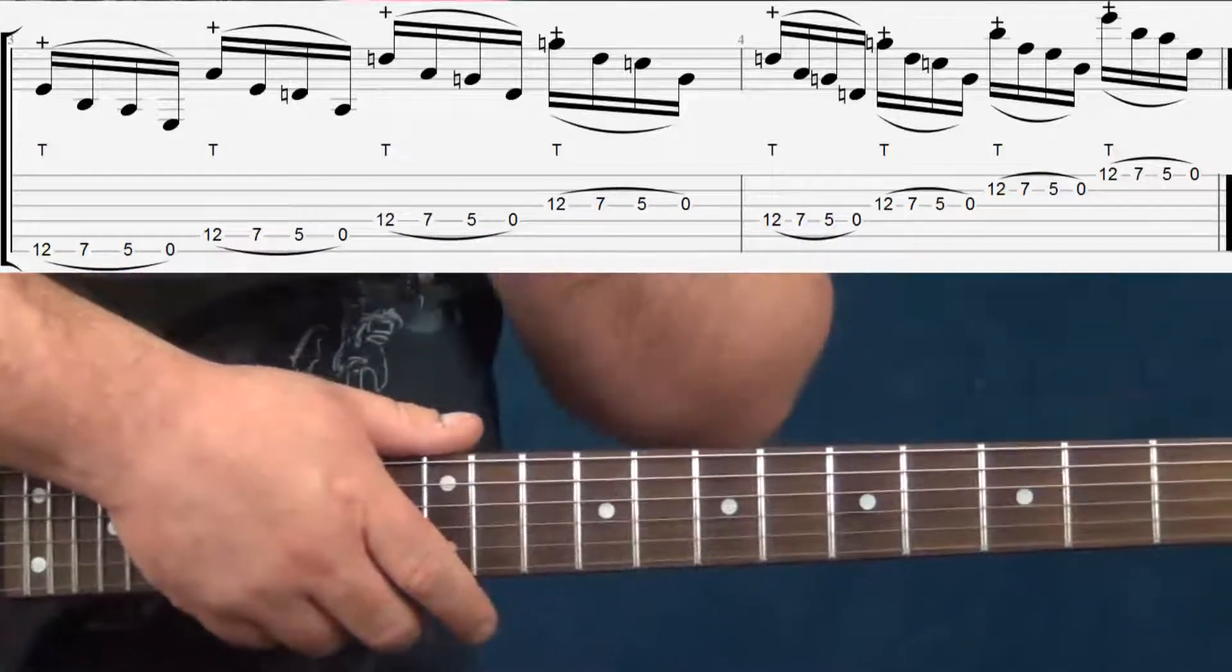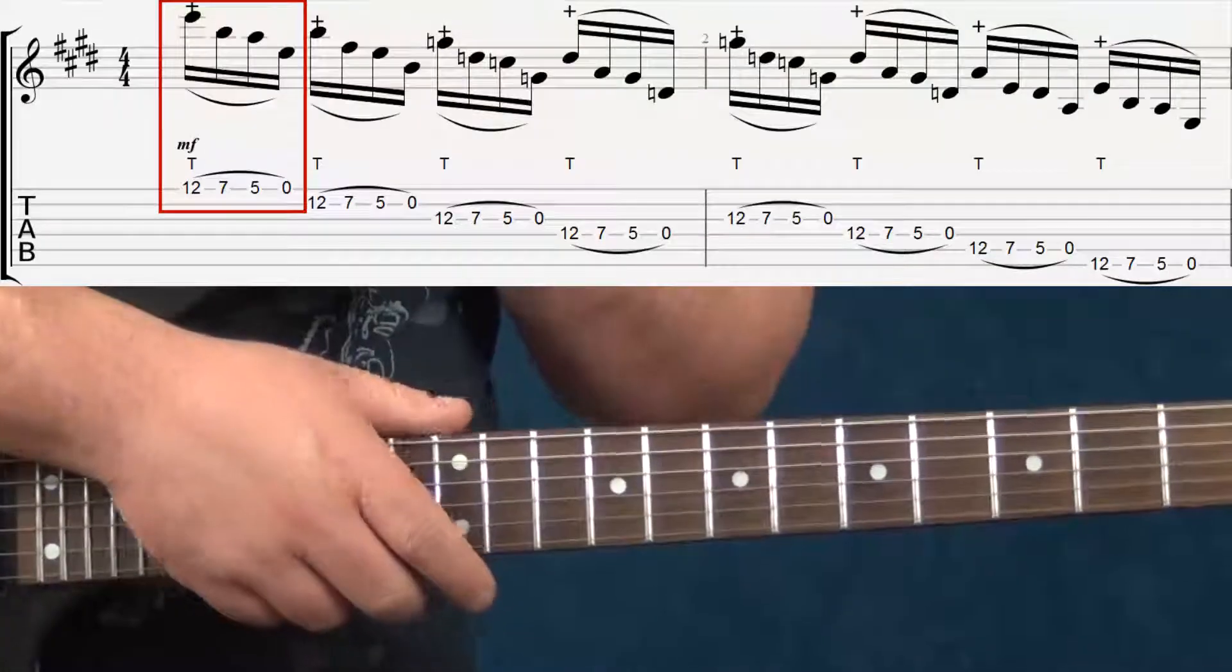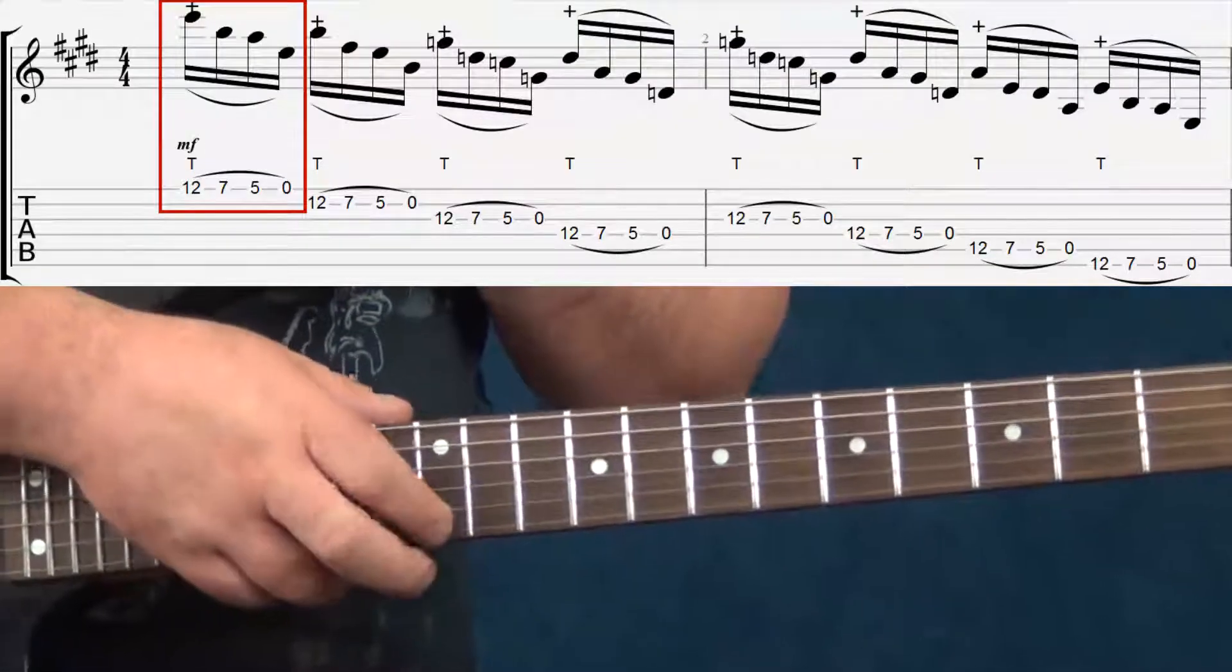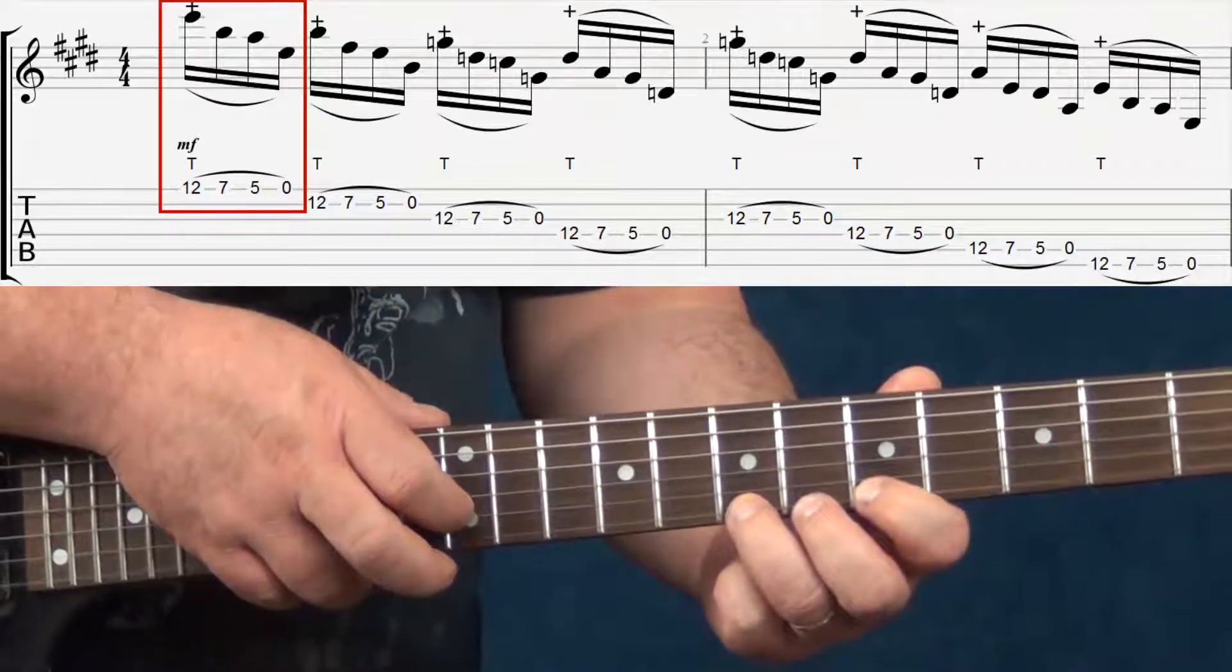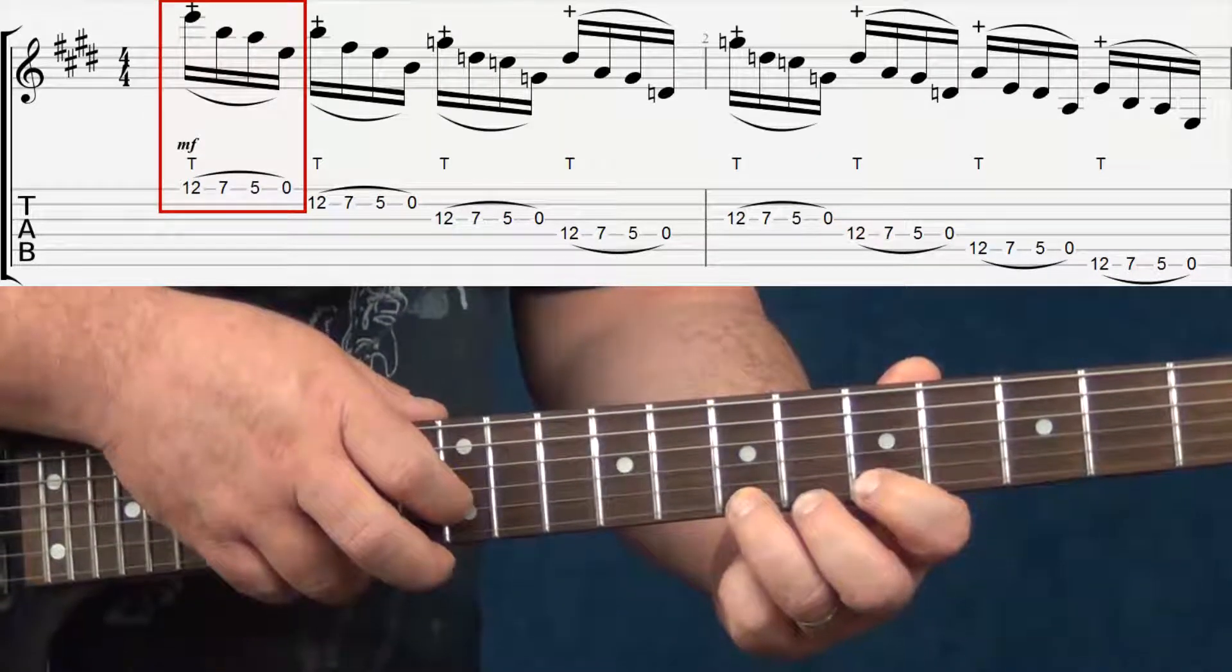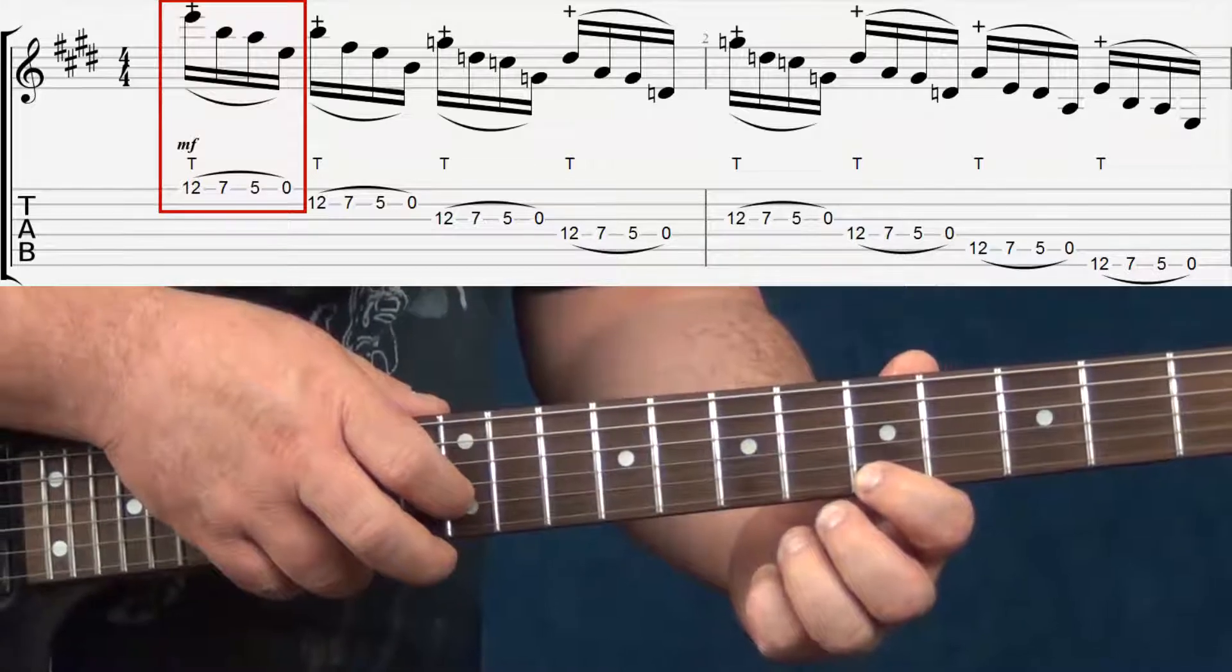Now we'll break it down measure by measure. Start off by placing your index finger on the 12th fret. Next pull off to the 7th fret. Pull off to the 5th fret, and finally pull off to the open string.